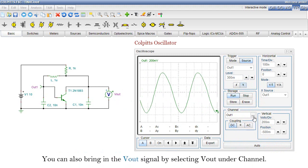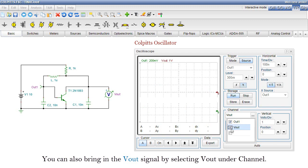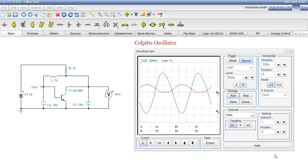You can also bring in the VOUT signal by selecting VOUT under Channel. Let's have the same vertical settings for VOUT as for OUT1.